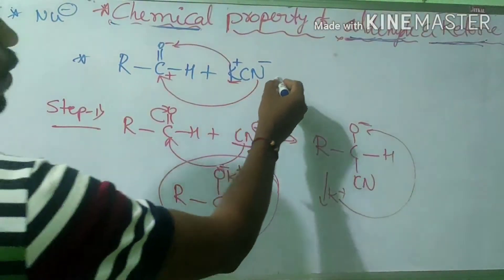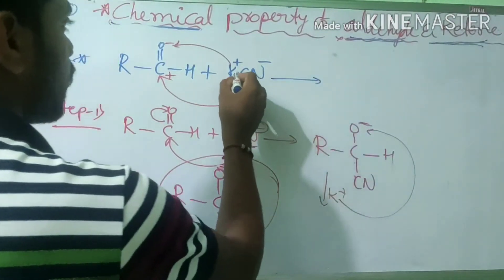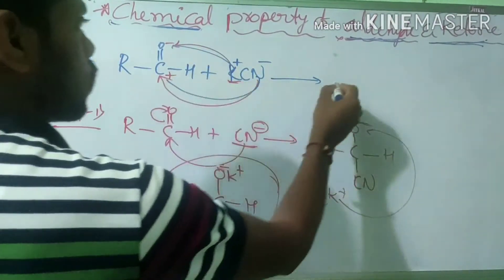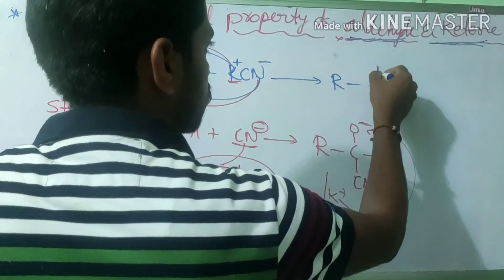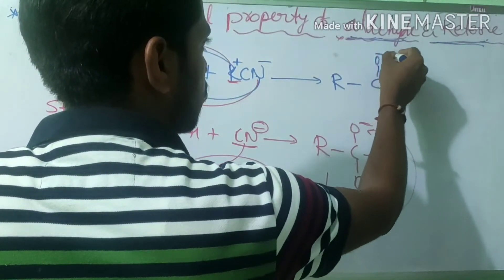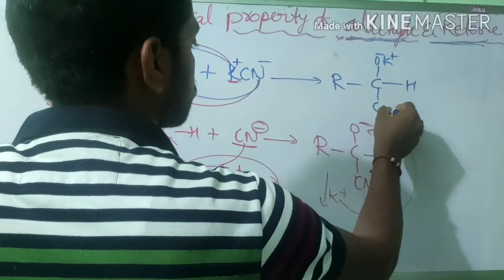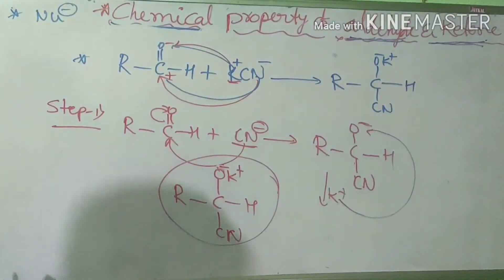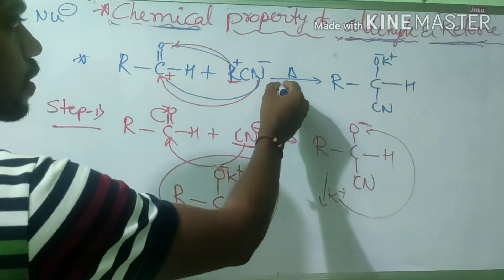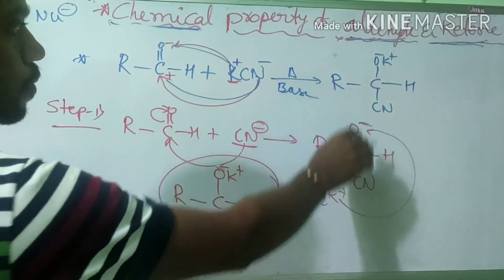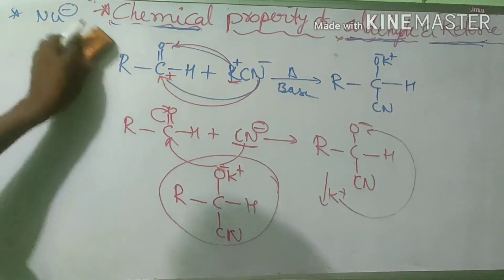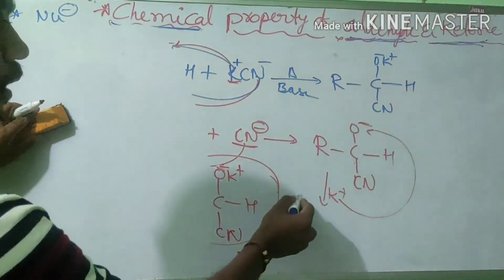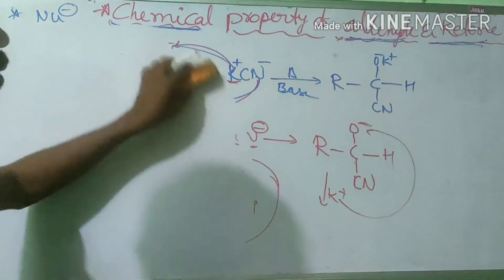So in the KCN reaction: R-CHO reacts with KCN where CN minus acts as the nucleophile and attacks the carbonyl carbon, giving the product R-CH(CN)-O minus K plus. This reaction may take place on heating or in basic conditions. This is a nucleophilic addition reaction.